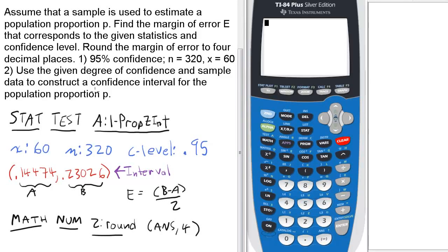The question is given in the upper left. To find the error, first we need to find the interval of this one prop z interval question.